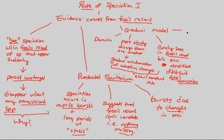Unfortunately, the gradual model provides no information about reproductive isolation, and notably punctuated equilibrium doesn't deeply address it either. Reproductive isolation is something both of these models don't touch upon greatly, even though it has been central to our broader discussion of speciation.